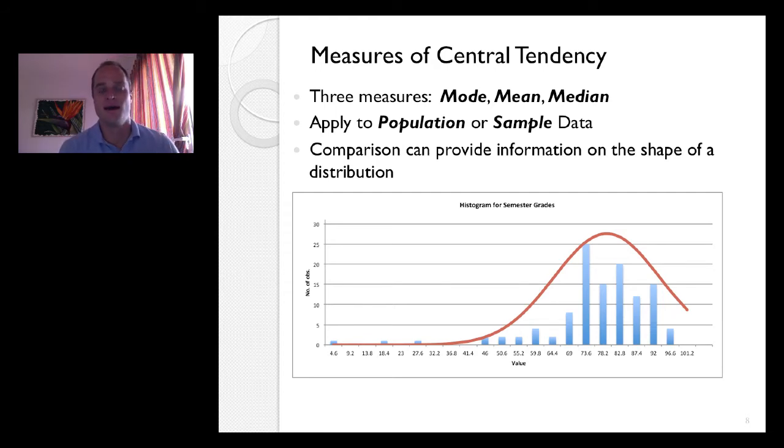Moreover, comparisons between these, namely the mean and the median, comparisons between the mean and the median can give us an understanding of how the data are skewed or which direction they're skewed if they are. In this case, this is a, and we'll see this graph again. This is a histogram for semester grades and the bars of the histogram are just spaced out just to, for no reason. And these are semester grades.